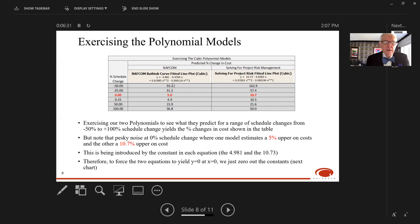Coming down to zero, as we observed from the plots, we're not getting a zero cost impact. At zero percent schedule change, we'd like the NAFCOM curve to give zero percent cost impact, but it's giving us that pesky five percent. Same for the project risk management curve—it's giving us 10 or 11 percent cost adjustment even at optimum schedule.